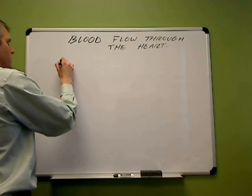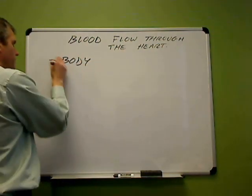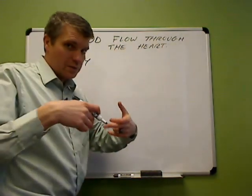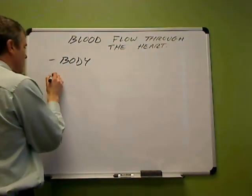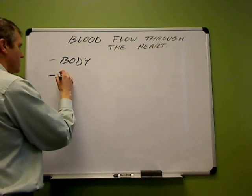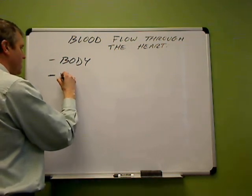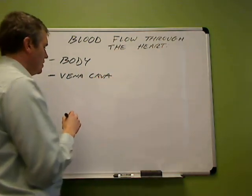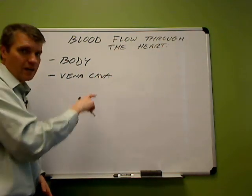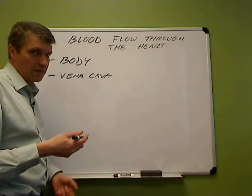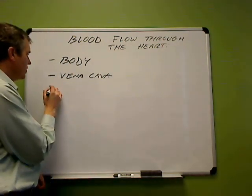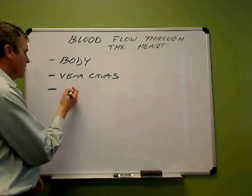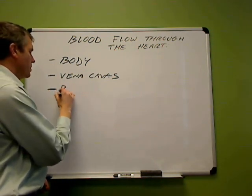We start with the blood being in the body and coming back to the heart. When it gets close to the heart, it's going to enter two major veins called the superior and inferior vena cava. There are two of them — the superior vena cava and inferior vena cava. From the vena cava, the blood then goes into the right atrium.